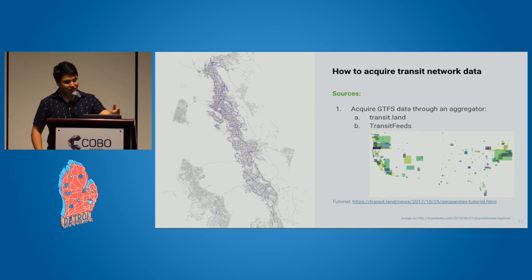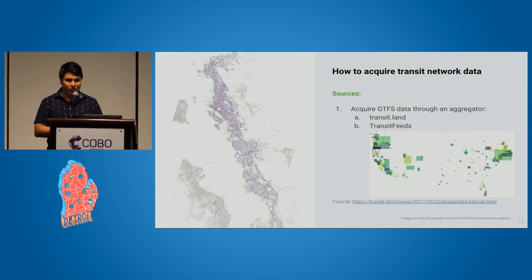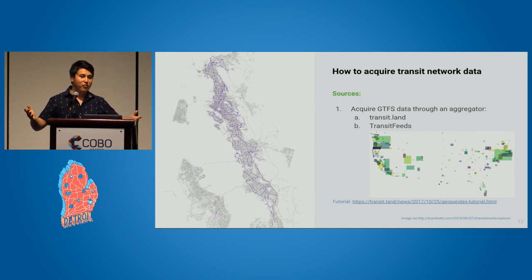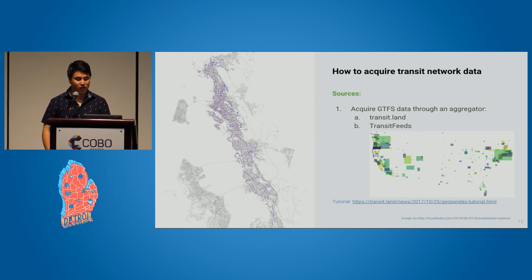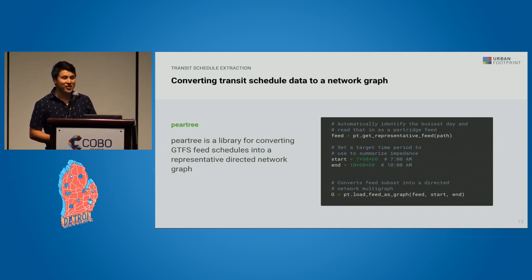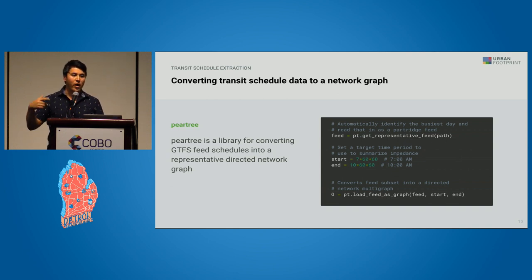Then you need the transit network. In this example, I have the transit network overlaid, produced from that GTFS data I was discussing earlier. There are two primary aggregators of GTFS data: Transit Land and Transit Feeds. Both have helpful blogs about how to pull down their data — it's basically a zip file of text documents. Once you pull that down, there's a handy tool called Pear Tree — caveat, I wrote it — but it's just a very quick one-liner.